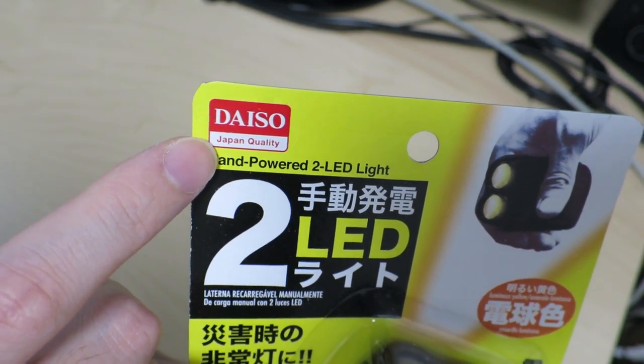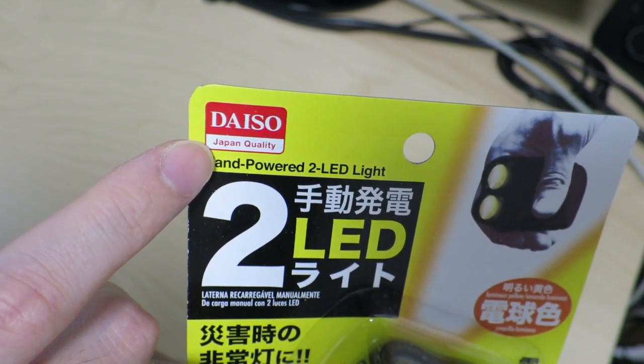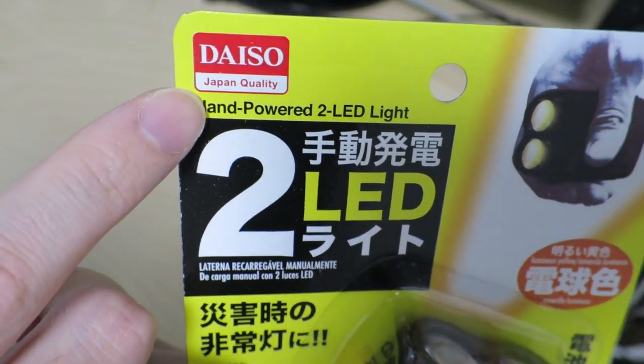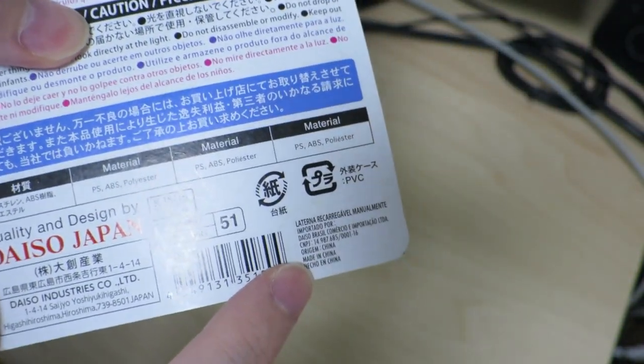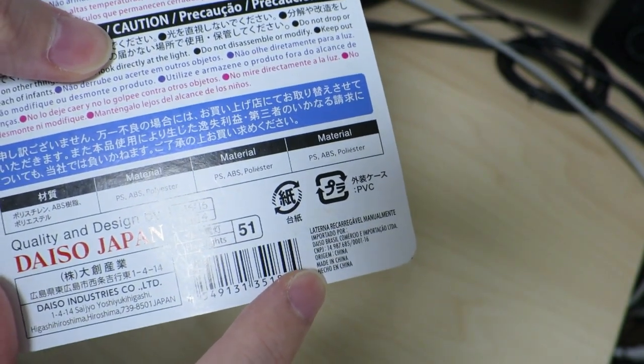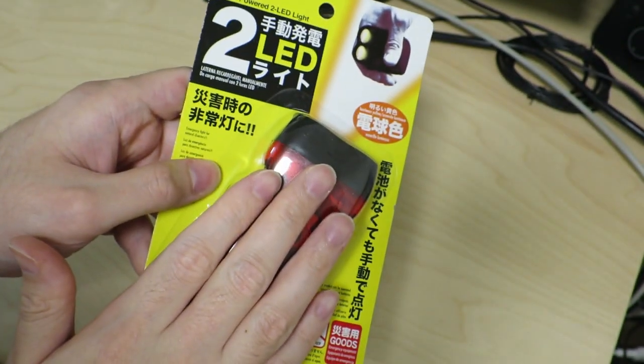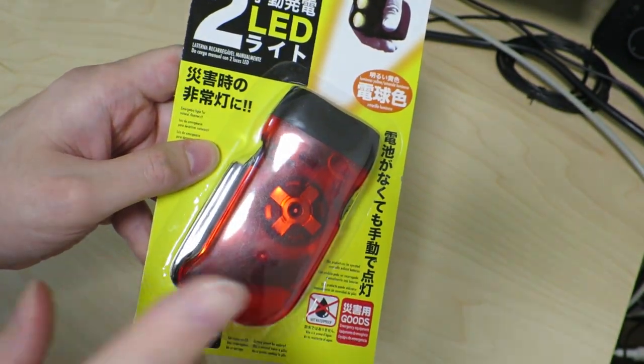Daiso is what is referred to as a 100 yen store in Japan, basically like a dollar store you would find in the US. Japan quality, made in China. The irony in the naming, right? Anyway, let's go ahead and take a look at the packaging and see what this is all about.